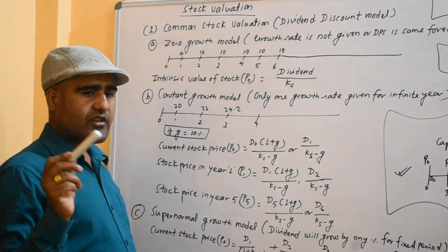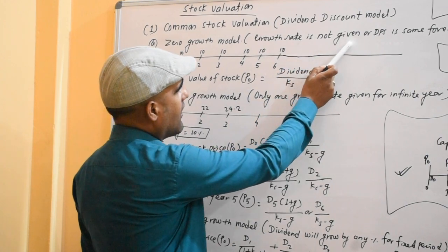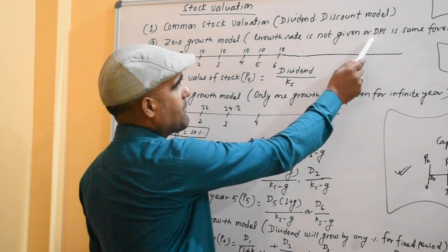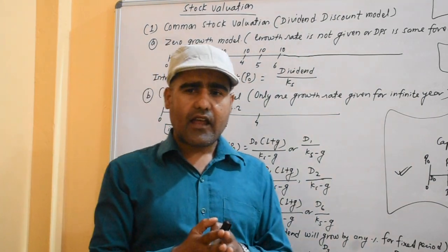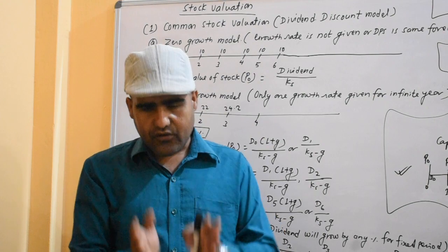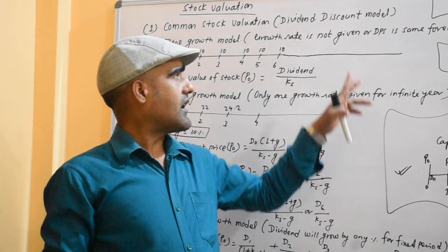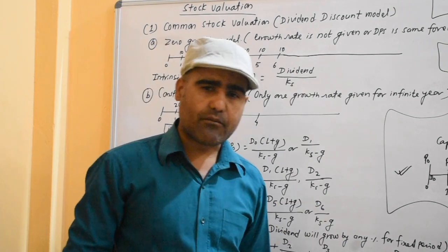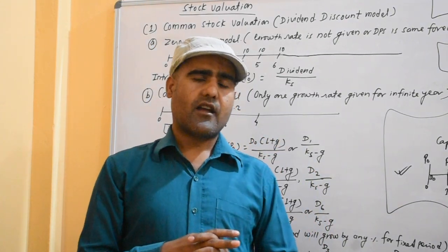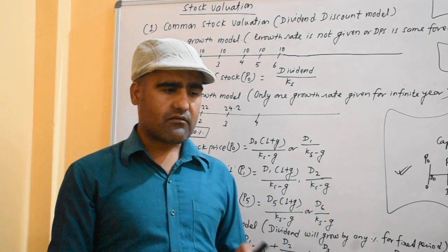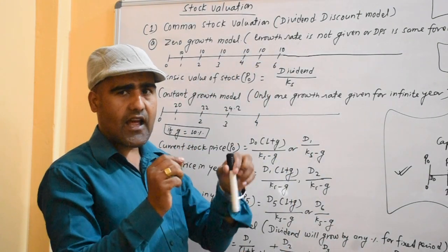The zero growth model means the growth rate is not given and the dividend per share is the same forever. In the zero growth model, the dividend is the same as a regular dividend per share. Because the zero growth rate means the dividend is constant, they have a paid account equivalent to that dividend.